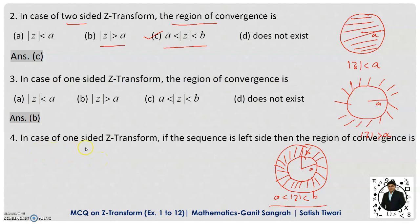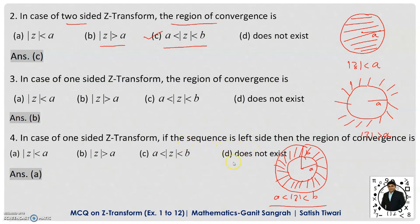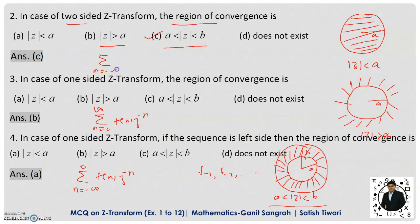Question 4: In case of the one-sided Z-transform, if the sequence is left-sided, then the region of convergence is — a left-sided sequence means the sequence runs from minus infinity to 0. In that case, the region of convergence will be |Z| less than A. So option A is correct. The left-sided sequence considers terms f(−1), f(−2), and so on, with N ranging from minus infinity to 0 and the two-sided form ranging from minus infinity to plus infinity.